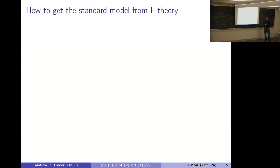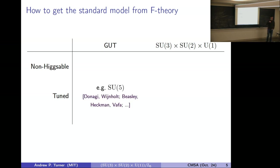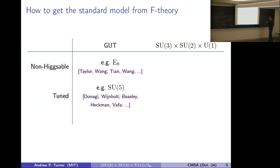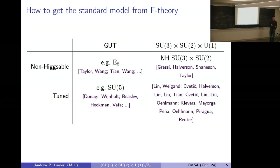Since I'm talking about tuning the standard model in F-theory, it's worth discussing different approaches. There are two binary choices: find the GUT or directly find the standard model, and find it in non-Higgsable gauge factors or tune it. The most extensively researched approach is to tune a GUT like SU-5. You can also look for a non-Higgsable GUT factor like E-8 and break it by fluxes, or look at non-Higgsable SU-3 times SU-2 gauge products. What I'm talking about today is directly tuning the standard model gauge group.